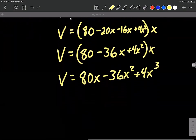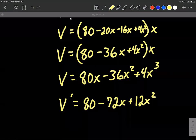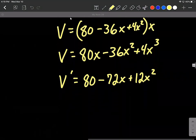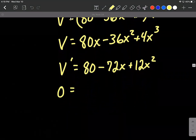Now we're ready to take the derivative. So V prime, the derivative of our function, is going to be, just using the power rule, 80 minus 36 times 2 is going to be 72x to the first power as we reduce the exponent by 1. And then plus 4 times 3 is going to make 12x to the second power as we reduce the exponent by 1 again. Now that we have taken the derivative, we want to find any critical values or critical numbers by setting the derivative equal to 0 and solving down.